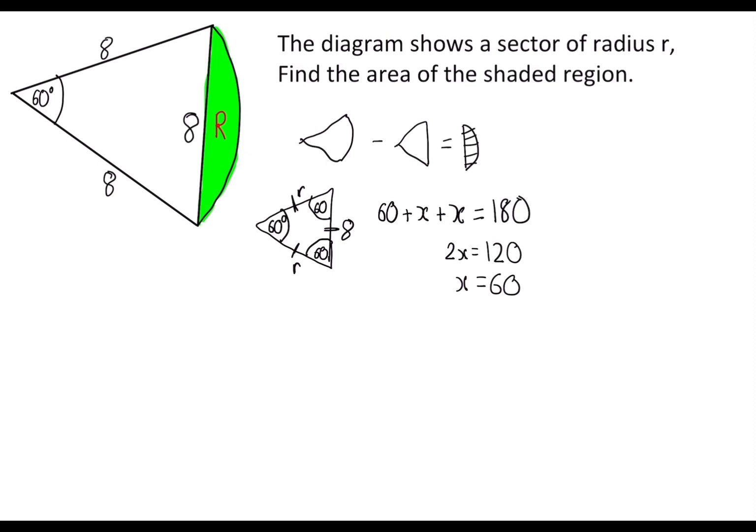First of all let's find the area of the triangle. So we have this triangle here. There are many different ways you can do this, but I'm going to use the formula half a b sine c. So this is a, this is b, and this is capital c. So we get half times 8 times 8 times sine of 60. This is going to be 64 over 2 times sine 60, which is root 3 over 2. And if we simplify that we're going to get 16 root 3.